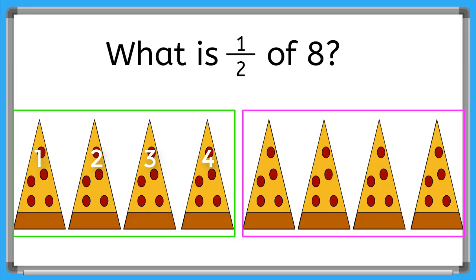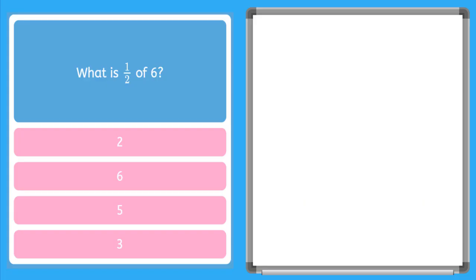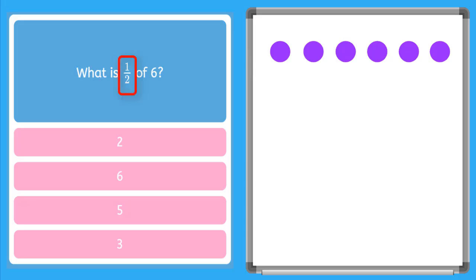Let's try another one. This one is asking me, what is one half of six? To help me, I'm going to draw six candies. Now if I look at my fraction, it says one over two. So again, this tells me I'm going to make two even groups with my candies.